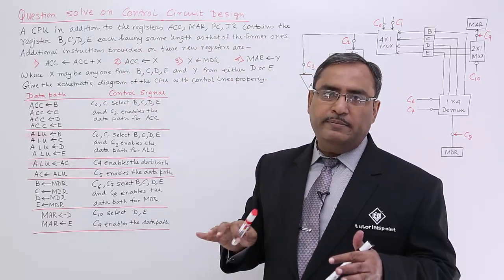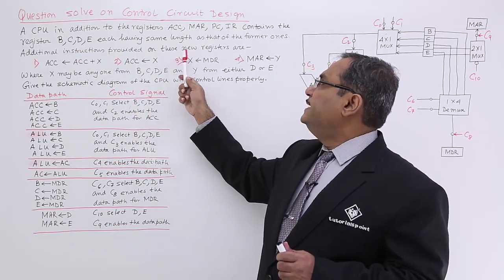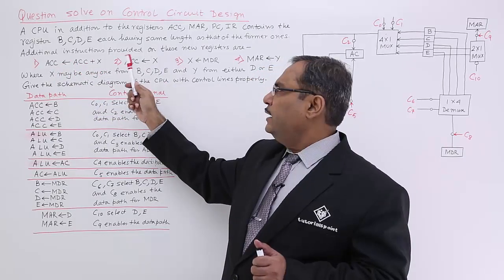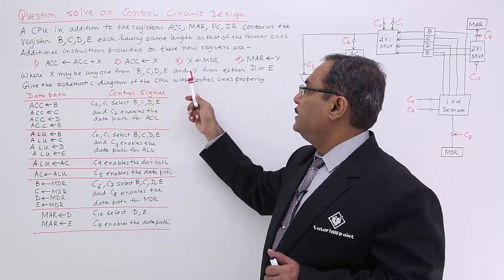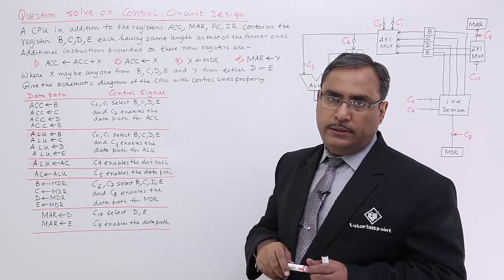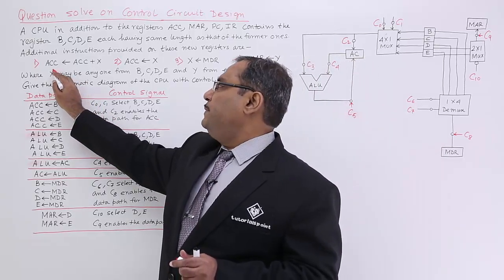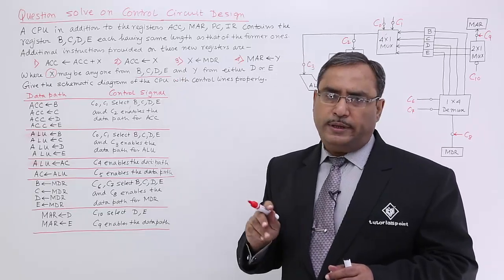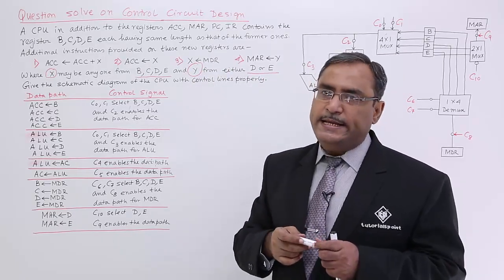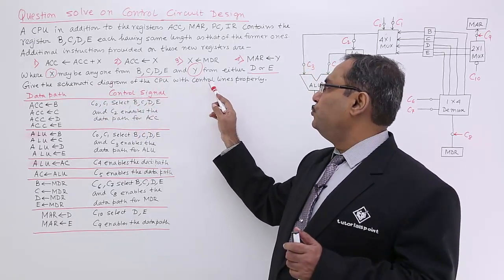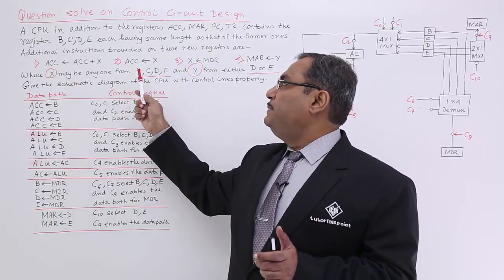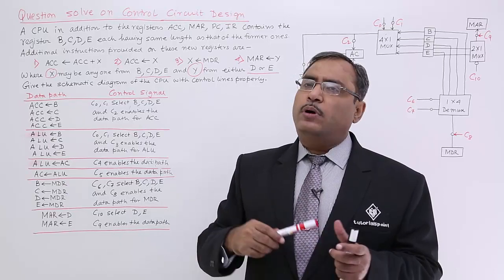So there is no problem with the length mismatch. Additional instructions provided on these new registers are: accumulator equals accumulator plus X. X will be initialized with the current value — X will get the value from MDR, which is the memory data register, and MAR will get initialized with Y. X and Y are unknown to us. X may be any one of B, C, D, or E, and Y can be any one of the registers D or E. Give the schematic diagram of the CPU with the control lines properly.